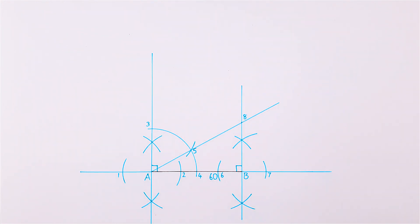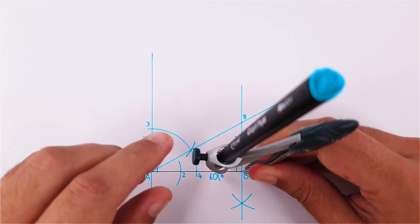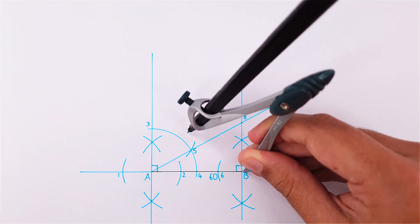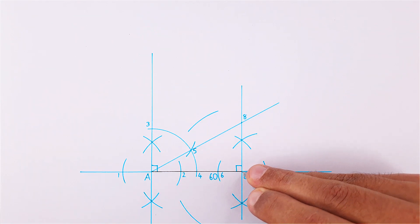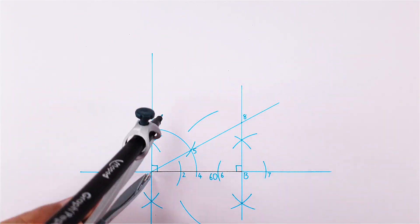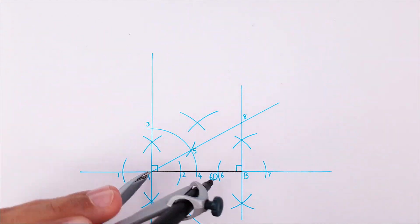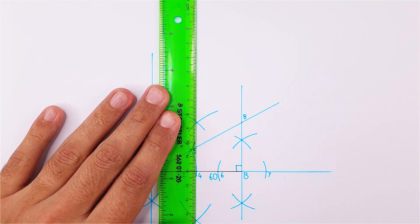Next we will construct our third perpendicular bisector using side AB. Place your compass on point B and adjust it to more than half the distance to point A. Draw an arc above and below side AB. Using the same measurement, do the same on point A and complete the perpendicular bisector.